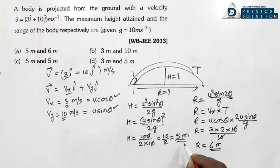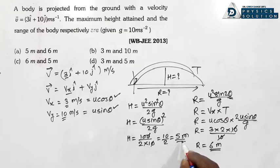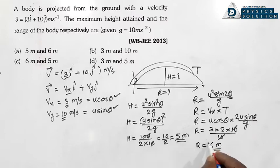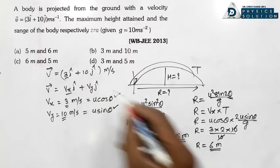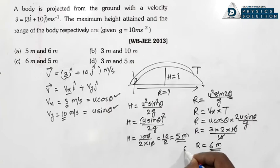H = 5 metre aur R = 6 metre. Option A hoga yahan par.